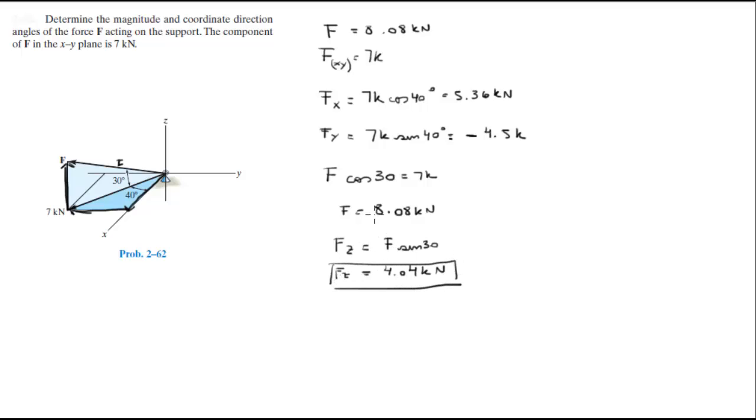Now we need to find the angles. The first angle, which is the one it forms with the x-axis, is cosine inverse of Fx over F. The second angle is the cosine inverse of Fy